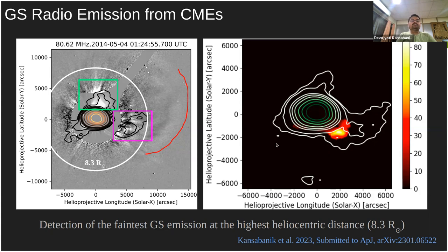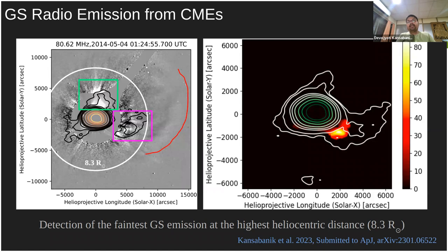In the image, the background is the LASCO C2 and C3 base-difference image, with radio emission contours at 80 MHz overlaid. We detected extended emission in the northern part overlapping with the white-light CME, and another component of extended emission in the southwestern part — not from the CME flux rope itself, but from a region where the CME interacts with a pre-existing streamer. We also detected gyrosynchrotron emission up to 8.3 solar radii and, for the first time, circularly polarized emission from the southwestern CME.